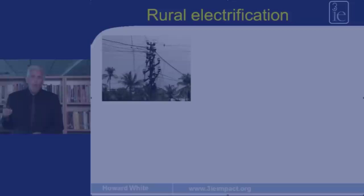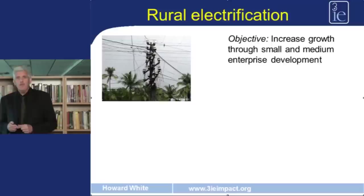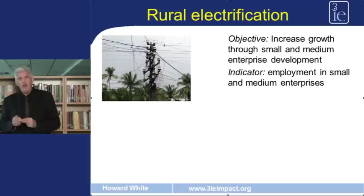Let's take the example of a rural electrification programme. One of the objectives of this programme is to stimulate economic growth in rural areas through the development of small and medium enterprises. The indicator we're going to use to measure the achievement of that objective is employment in small and medium enterprises.